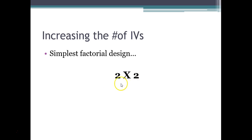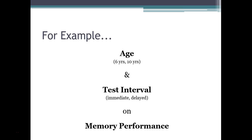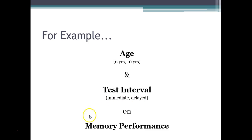The simplest factorial design is a two-by-two factorial design, meaning we have two independent variables — two factors — and each one has two levels, with one dependent variable. For example, in a two-by-two study we're looking at age as one factor, testing six-year-olds and ten-year-olds, and test interval as the second factor — either immediate or delayed recall. The dependent variable is memory performance.